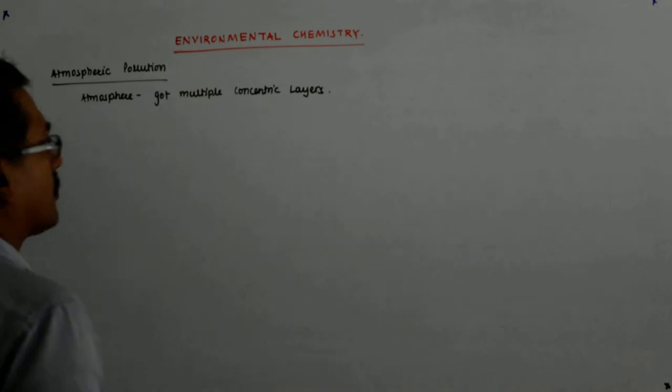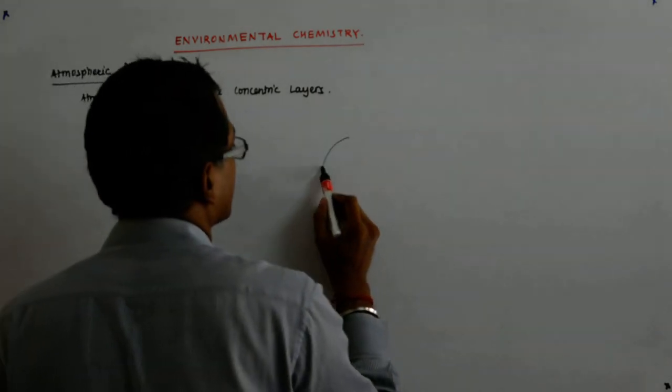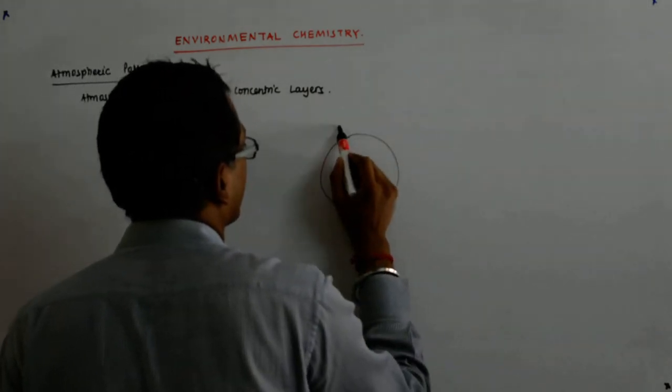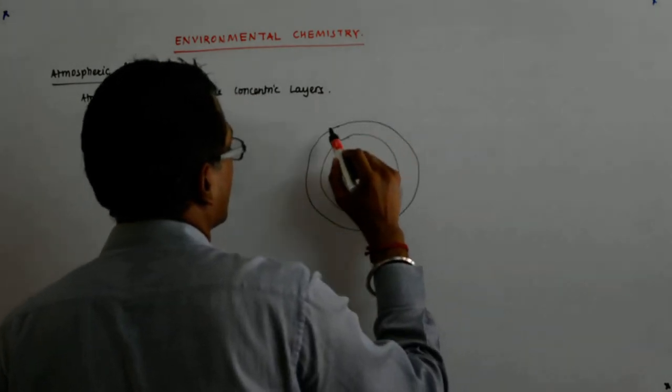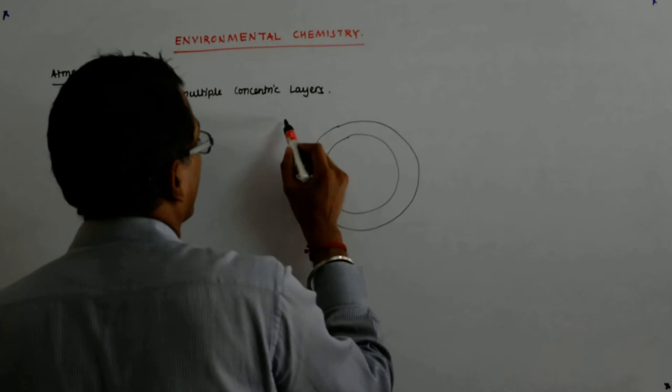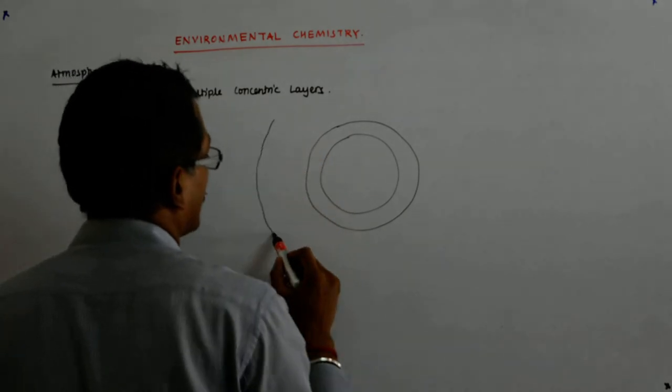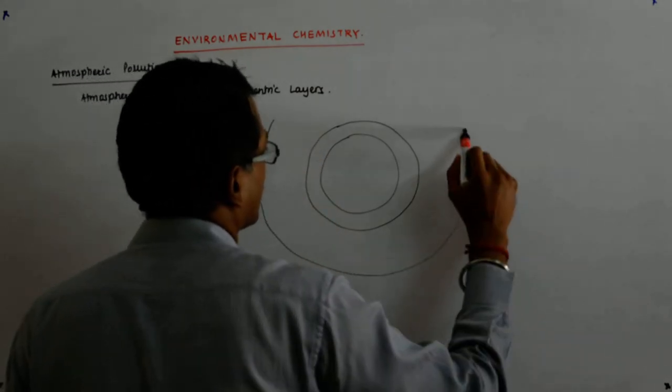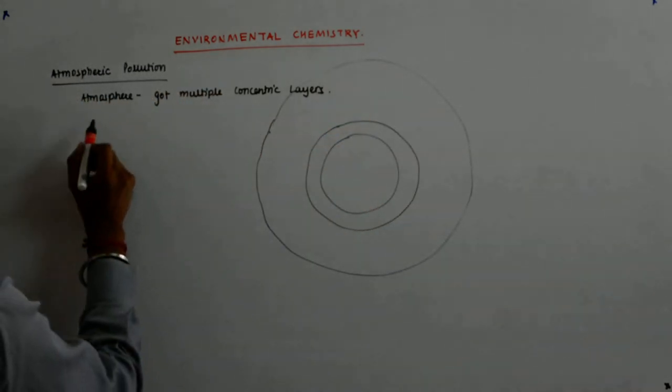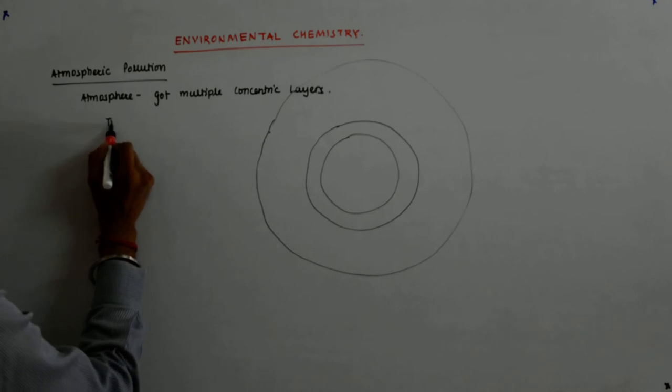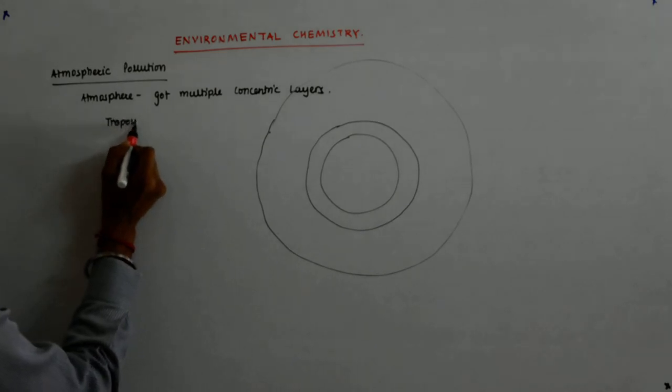So we have our Earth like this and then we have a thin shell of air. So we have basically our troposphere.